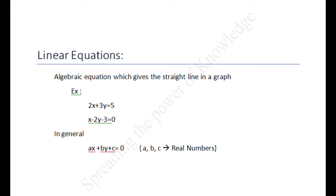For example: 2x plus 3y equal to 5, x minus 2y minus 3 equal to 0. In general, ax plus by plus c equal to 0, where a, b, c are real numbers. For any linear equation, each solution (x, y) of a linear equation in two variables ax plus by plus c equal to 0 corresponds to a point on the line representing the equation, and vice versa.